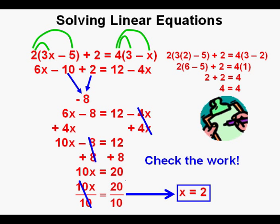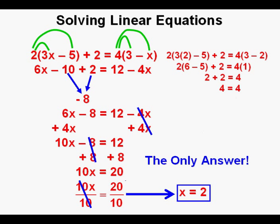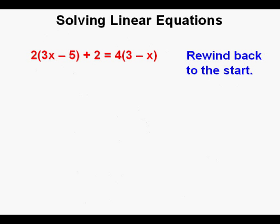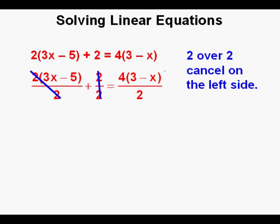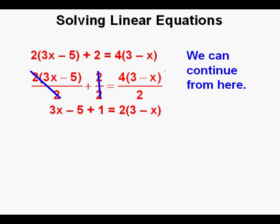Check the work: we plug 2 for x back into the original equation. Since 4 equals 4, we are certain that x equals 2, and we box in x equals 2 as our correct answer. In any linear equation, there is only one solution, and that answer is 2. Note that we could also have started by dividing by 2 to simplify before going further — there are multiple ways to solve equations.